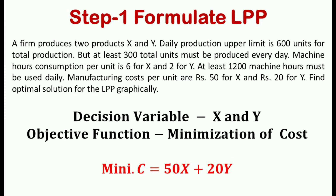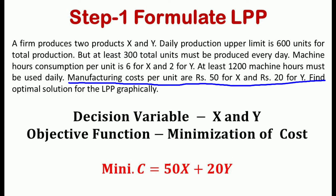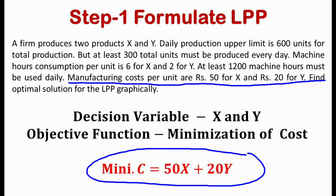In this example, a firm wants to produce two products, which are considered as decision variables x and y. The manufacturer wants to minimize the cost. So our objective function is minimization of cost, because manufacturing cost per unit is given. The objective function is: minimize C = 50x + 20y, because the manufacturing cost per unit of product x is 50 and for product y is 20.